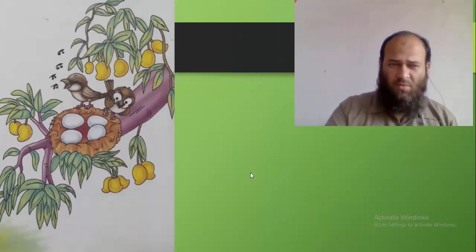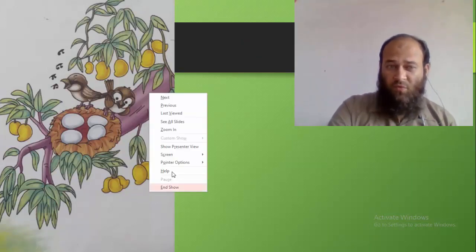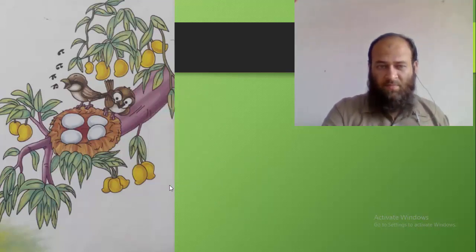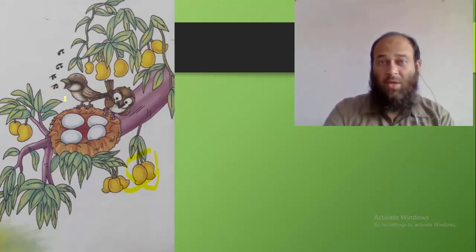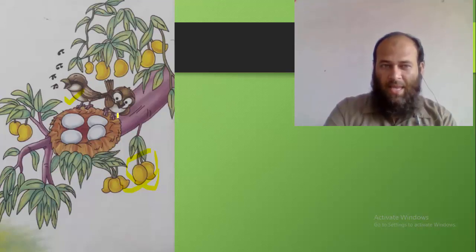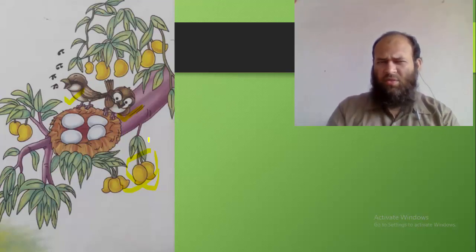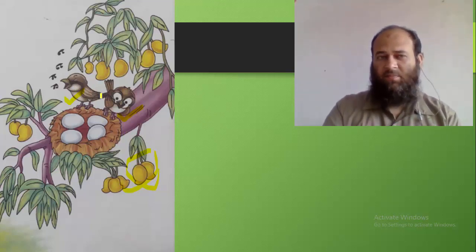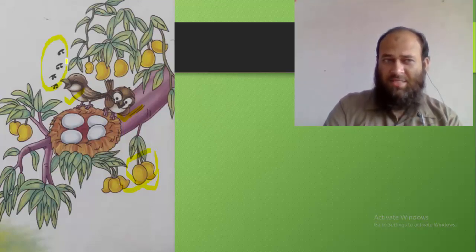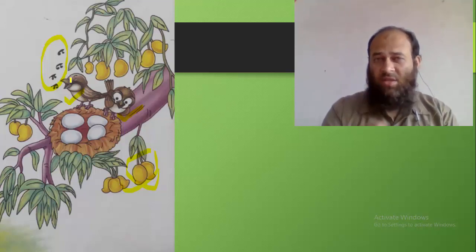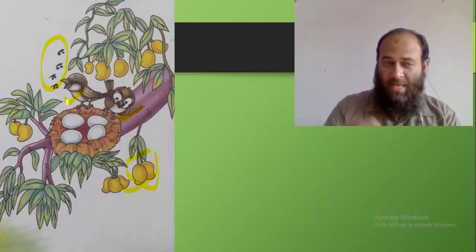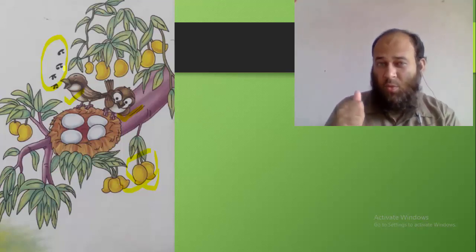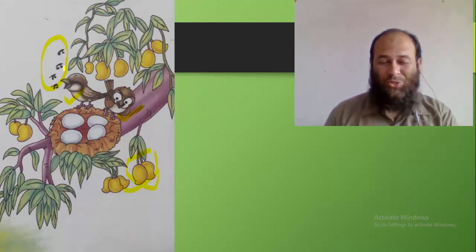Now, what type of tree do we have here? What fruits do you see here? This is a mango tree. And who do we have here on the mango tree? We have one and two sparrows. What do you think this sparrow is doing? What can you make of these symbols, these designs given here? The beak of this bird is open and there are some designs here. Do you know what she is doing? She is singing.